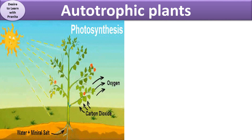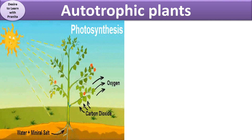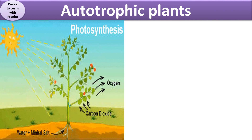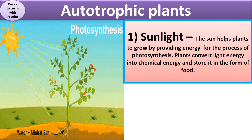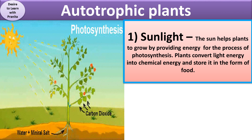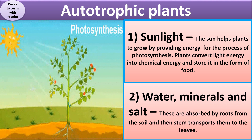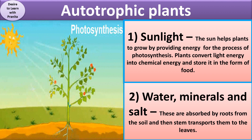Autotrophic plants are able to produce their own food through photosynthesis. In photosynthesis, some elements are very important. First is sunlight — with the help of sunlight, plants convert light energy into chemical energy, which is stored in the form of food. Sun helps the plant to grow by providing energy. Second, water, minerals, and salts are absorbed by roots from the soil, and then the stem transports them to the leaves.